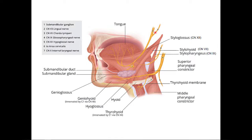The lingual nerve is very importantly joined by the chorda tympani, which comes from cranial nerve seven, the facial nerve. The chorda tympani brings special sensory taste fibers to the anterior two-thirds of the tongue, and parasympathetic fibers that synapse in the submandibular ganglion. So the lingual nerve contains general sensory afferents for the anterior two-thirds of the tongue, plus taste and parasympathetics via the chorda tympani.